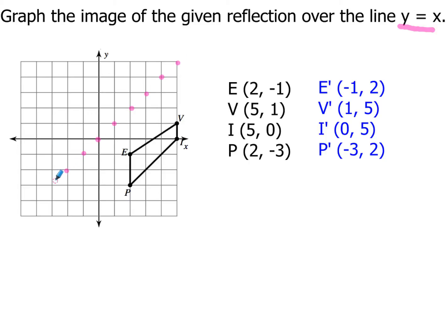So I can plot this line, y equals x, right there. And then I'll go ahead and draw my line y equals x. Now, using the coordinates that I have, e prime is at negative 1, 2. So that's going to be up here. v prime is going to be at 1, 5. i prime is going to be at 0, 5. And p prime is going to be over at negative 3, 2.